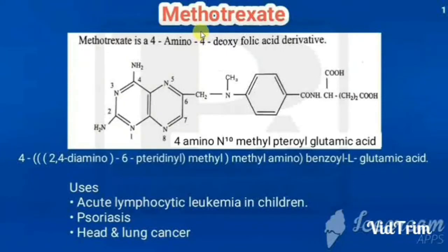In the last class we covered purines and anti-metabolites under anti-neoplastic agents. In this class we are going to see folic acid antagonists and also pyrimidine antagonists under anti-metabolites. The drug coming under folic acid antagonist is methotrexate.